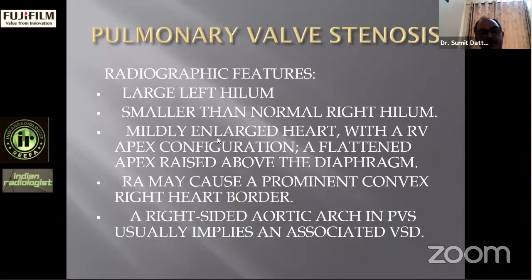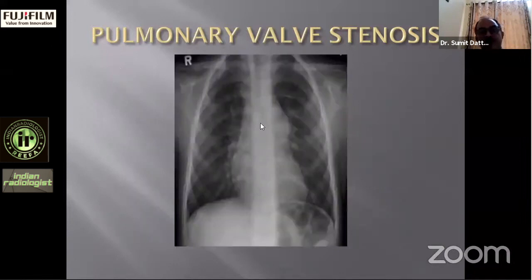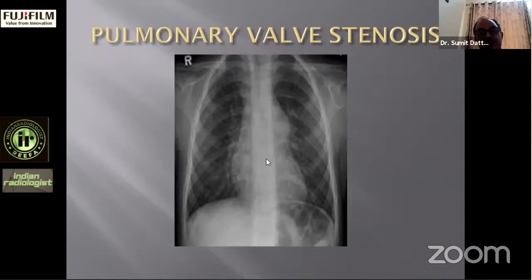Radiographic features of pulmonary valvular stenosis include a large left hilum, a smaller-than-normal right hilum, and a mildly enlarged heart with right ventricular apex configuration — a flattened apex raised above the diaphragm. The right atrium may cause a prominent convex right heart border. A right-sided aortic arch in pulmonary valvular stenosis usually implies an associated VSD. When Eisenmenger's reaction sets in, the shunt reverses from right to left, the heart is not greatly enlarged, oligemia sets in, but the main pulmonary trunk remains dilated due to post-stenotic dilatation.